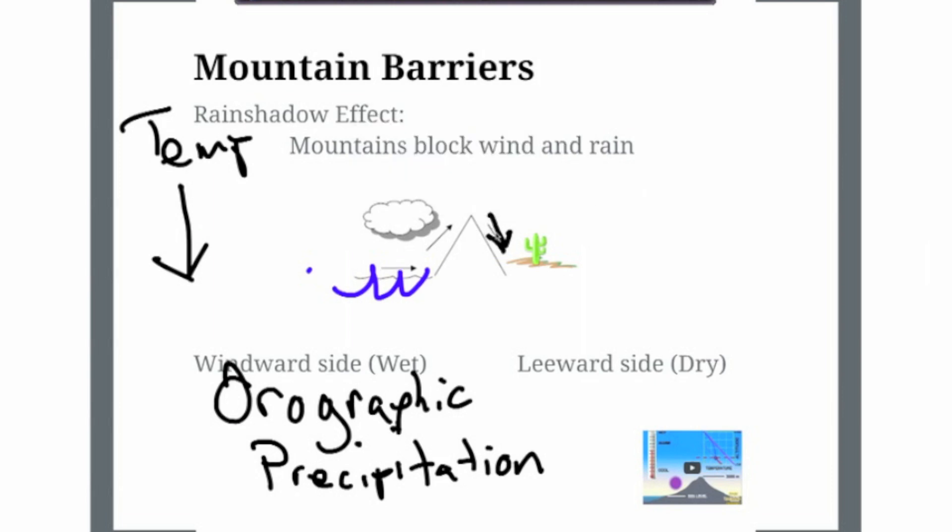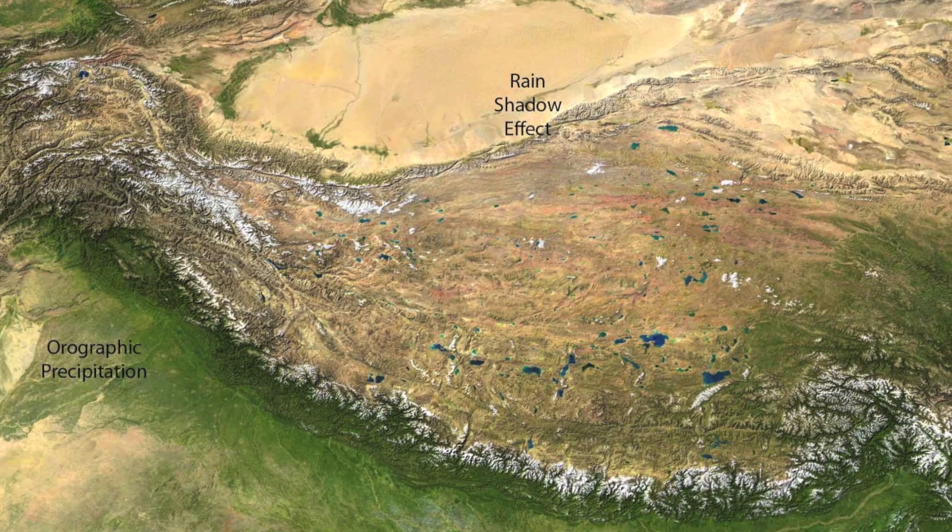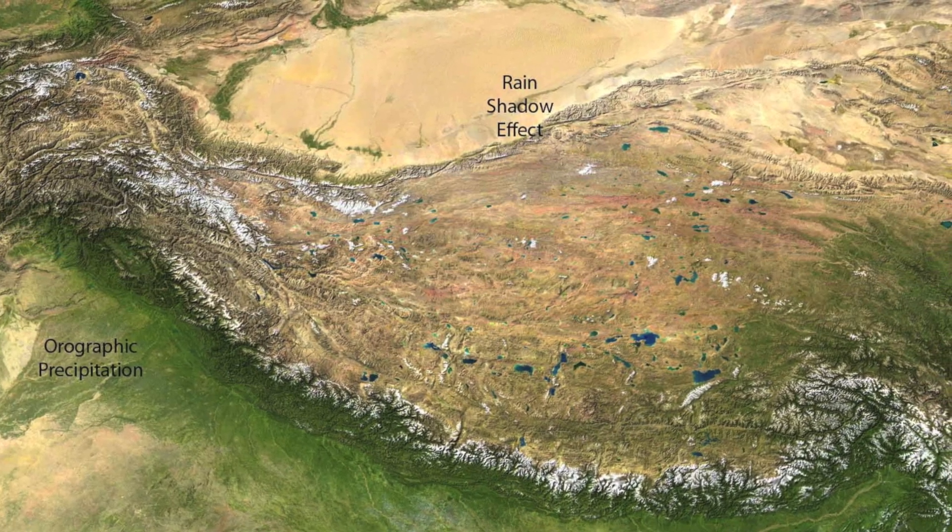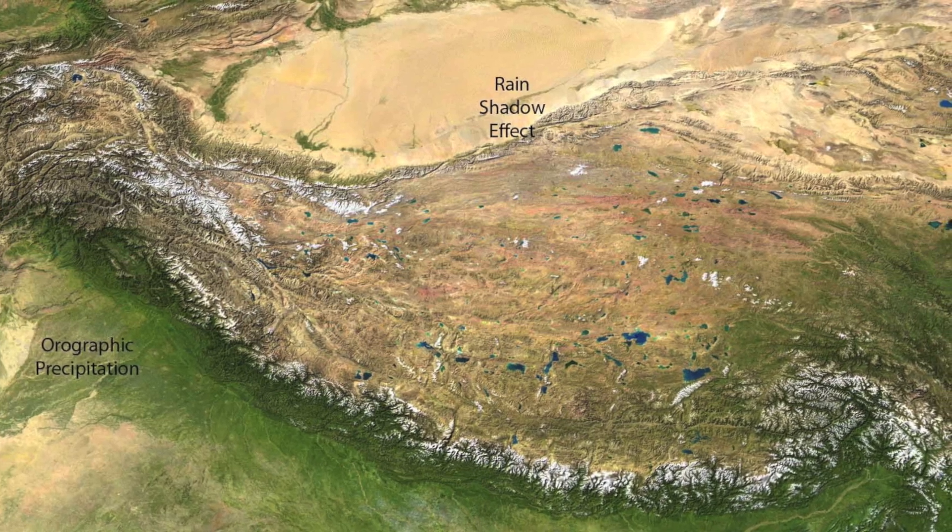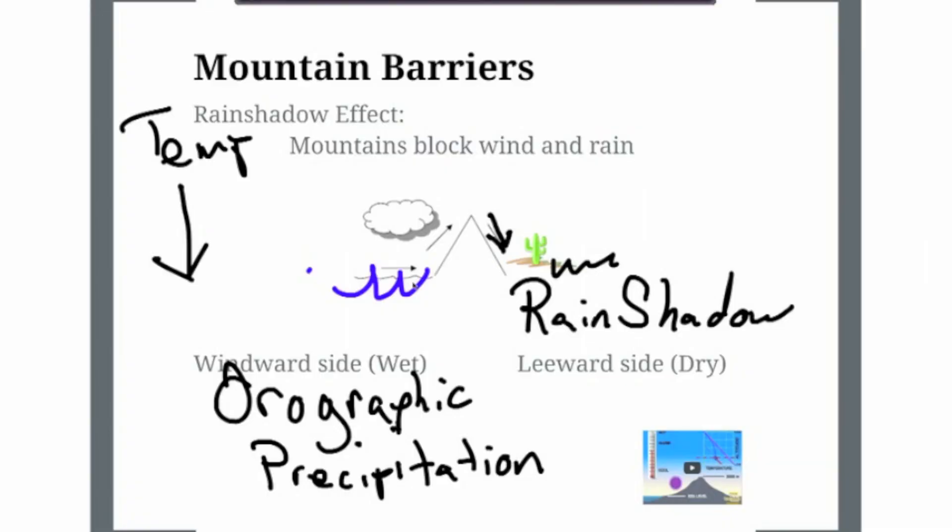When that happens, all the water is going to evaporate off, and you're going to have very little rainfall over here in this area. And that's called the rain shadow effect. So on one side of a mountain, on the windward side, you're going to have very wet conditions. It's very likely you could have a forest or a lot of vegetation over here. Whereas on the other side, you're going to have what's called the rain shadow, and it's going to be very dry.